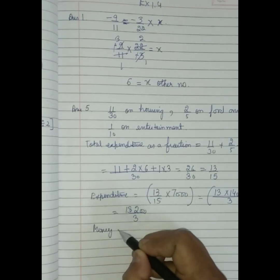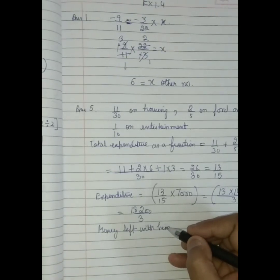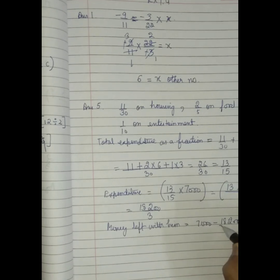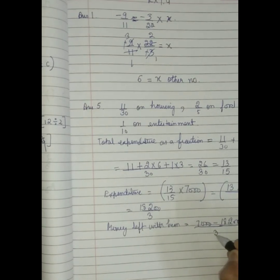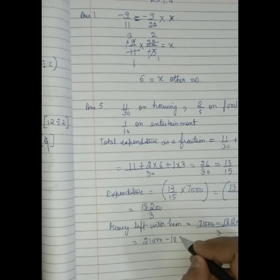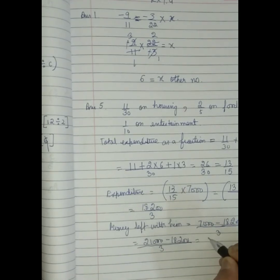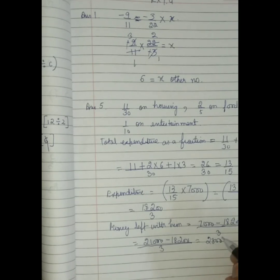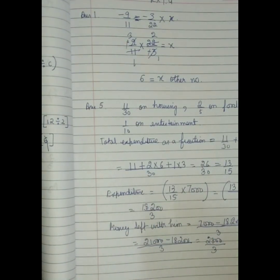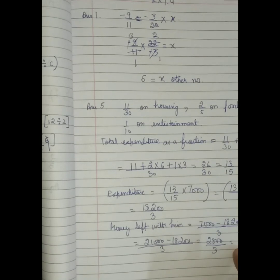Money left with him is equal to 7,000 minus 8,203. Now we will take again the LCM. Money left with him, okay. And this is his expenditure. And this is money left with him. If we calculate it in mixed fractions, we will get this answer. I hope student, now this exercise is clear to you.